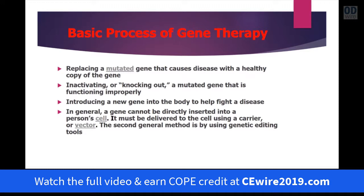We'll also be finding how we can introduce a new gene into the body to help fight disease. There are several methods being used now that are very simple conceptually but very complex to develop, though the actual process is not that difficult. In general, a gene cannot be directly inserted into a person's cell — it needs some sort of vector, some sort of method of getting that gene into the cell. We're going to discuss the most important methods presently used in eye care and systemic medicine, and we'll see some processes that will occur in the near future.